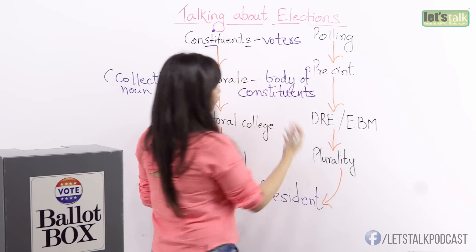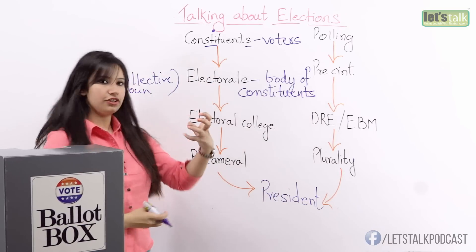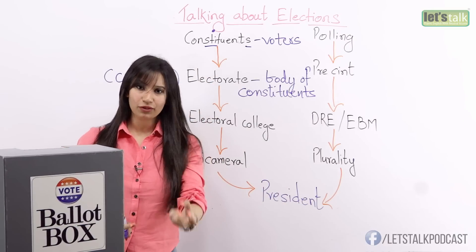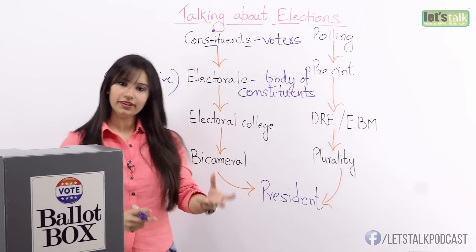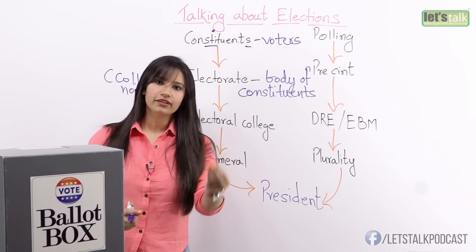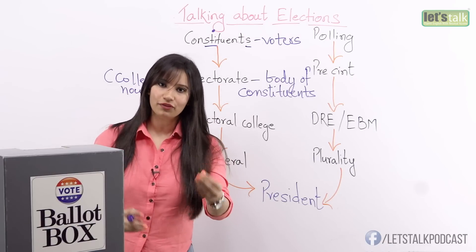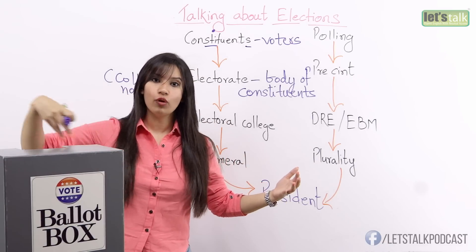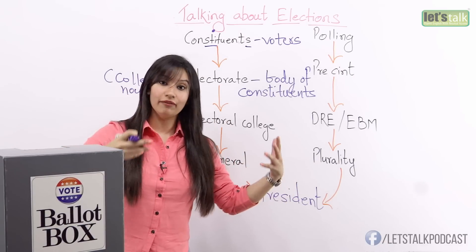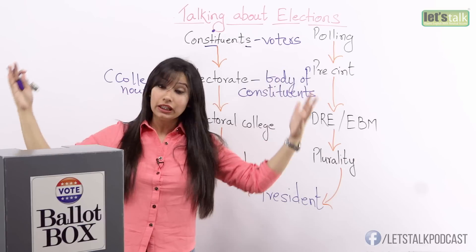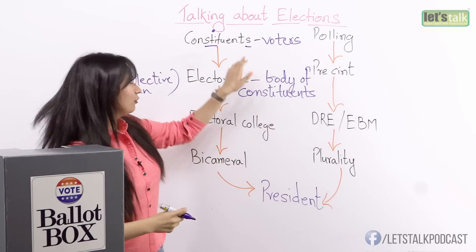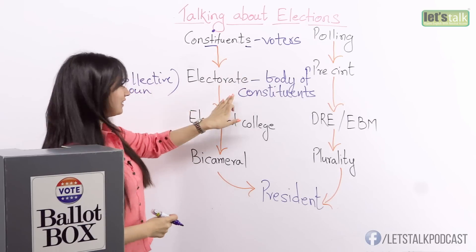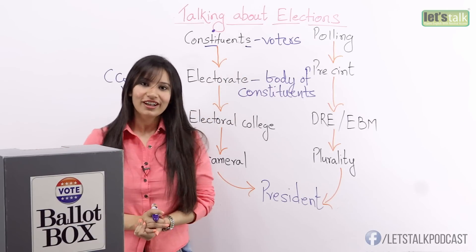Just to make it more clear: constituents are the people who constitute the electorate — they are part of the electorate. Electorate is an overall collective body having many constituents, where constituents is countable and electorate is a collective noun.